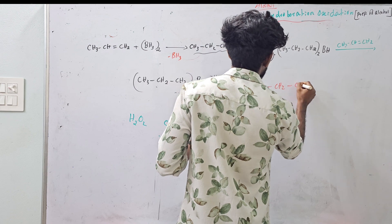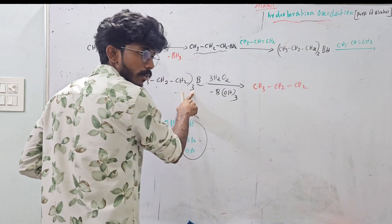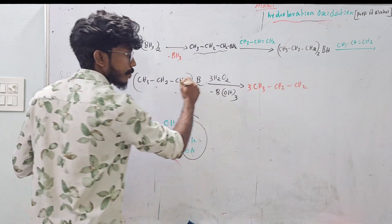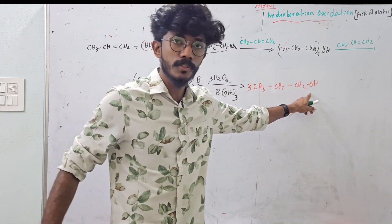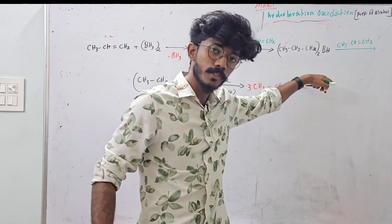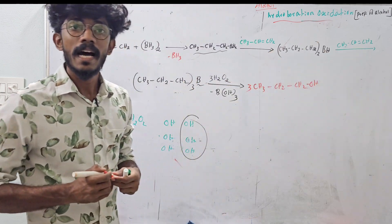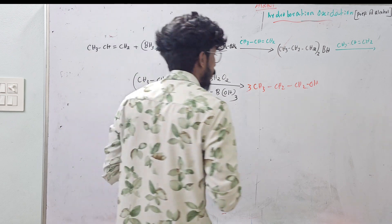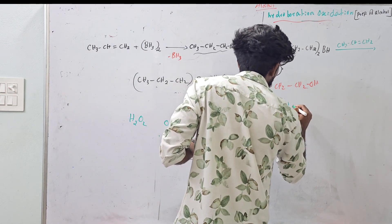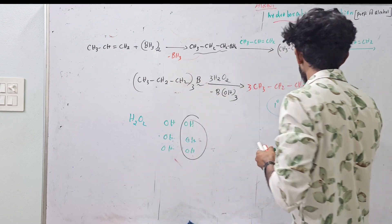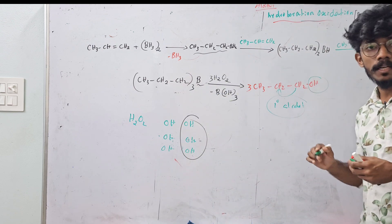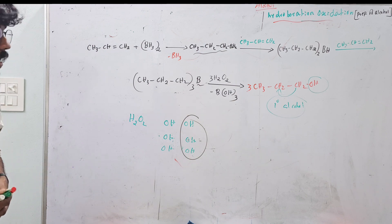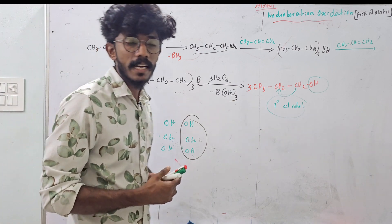CH3, CH2, CH2 — and how many OH groups? The product is CH3-CH2-CH2-OH, and this is propanol. This is primary alcohol. This is the functional group and it is a primary alcohol.